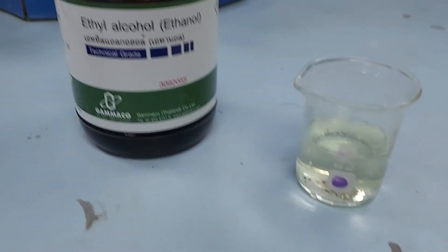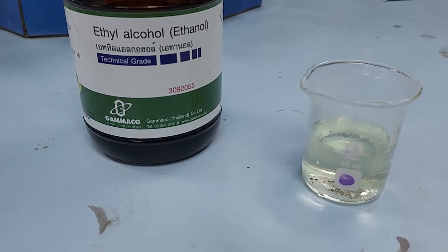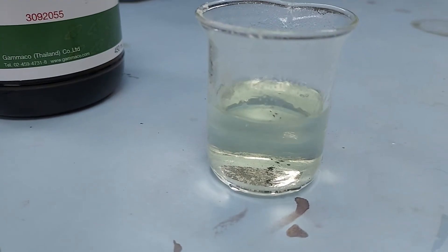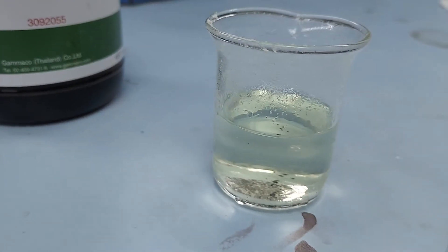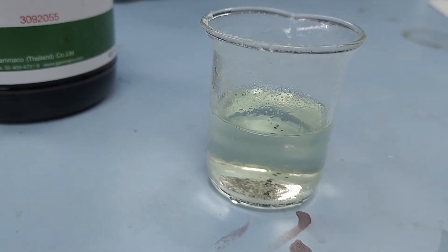For stage two of the experiment, our solid is recrystallized using warm ethanol until it's all dissolved. Now we're going to crystallize it out by cooling it down and placing it in ice cold water.